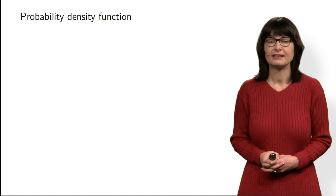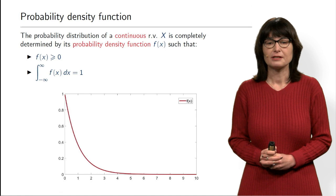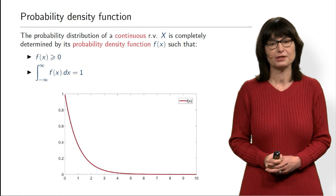So how do we mathematically describe continuous random variables? Here comes a very important notion — the probability density function — which is very important to understand in this course. The probability density function of a continuous random variable completely defines the distribution. Let's look at the picture.